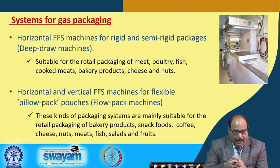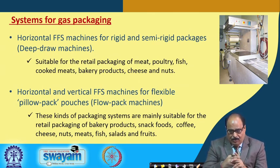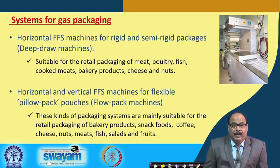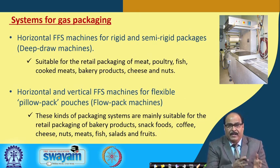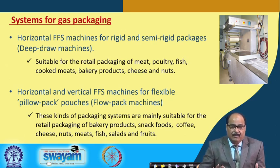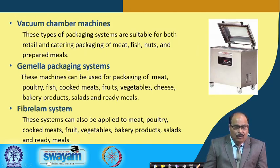Horizontal and vertical FFS machines for flexible pillow-pack pouches — so-called flow-pack or product machines — are mainly suitable for retail packaging of bakery products, snack foods, coffee, cheese, nuts, meats, fish, shallots, and fruits. These are also relevant because for meat products and similar items, lipid oxidation — the chemical oxidation of these materials — is of major concern, and by manipulating oxygen concentration these chemical oxidation processes are controlled.